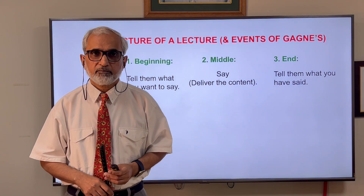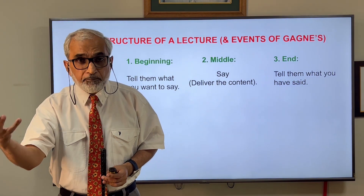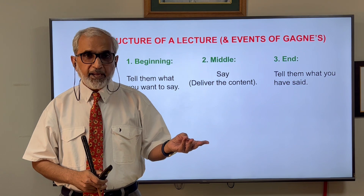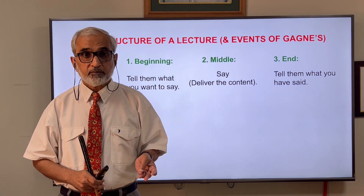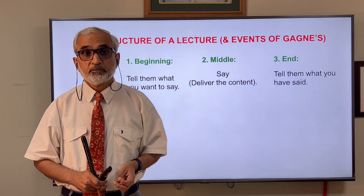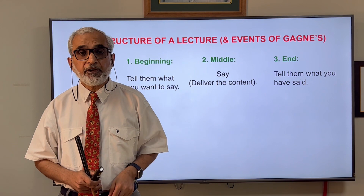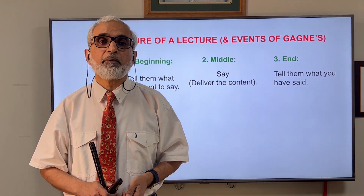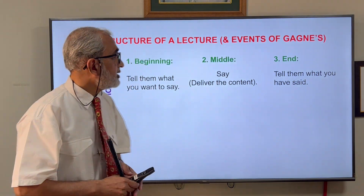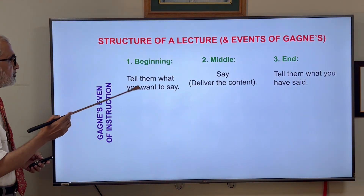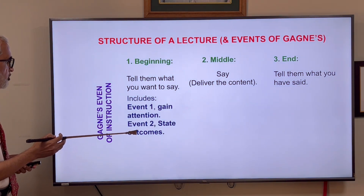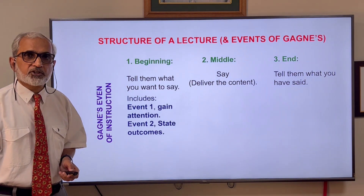Gagné's nine events — or conditions of instruction — state that if those conditions are present in any lesson, learning is optimized. They are: gain attention, state learning outcomes, activate prior knowledge, present stimulus material, and provide learning guidance. These can be correlated with the beginning, middle, and end structure. The beginning — 'tell them what you want to say' — includes event one: gain attention, and event two: state outcomes.